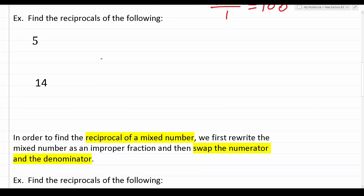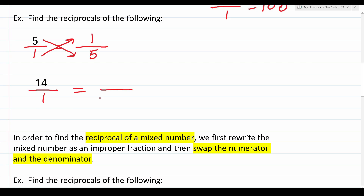With that in mind, let's tackle these examples. First, let's find the reciprocal of five. We write it as a fraction by placing it over one, then swap the numerator and denominator. The one comes up to the numerator and the five goes down to the denominator, giving us one over five. Now for 14 — we write it as 14 over one, swap, and the one comes up and the 14 goes down. So the reciprocal of 14 is one fourteenth, and the reciprocal of five is one fifth.